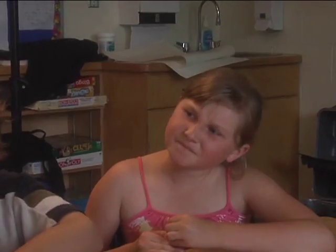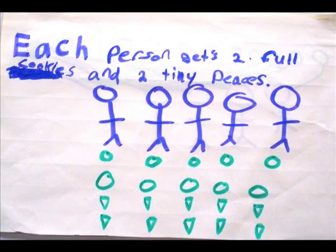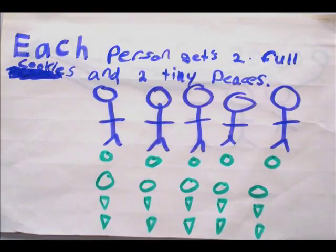So why did you say 2 tiny pieces? They've got 2, did you share these cookies first? Yeah. You shared the whole cookies first, and then what was left over? Two, and we split them into tiny pieces. And you split those 2 cookies into 10 pieces? Yeah. Okay.